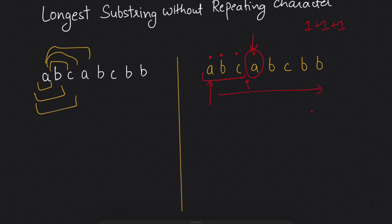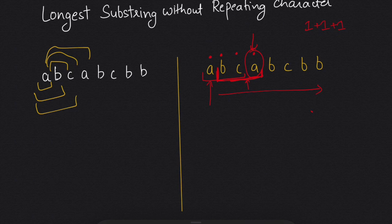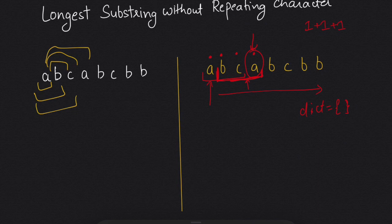Whenever we encounter a character we have seen before, we increase our starting point by one. So now our starting point starts from 'b' and our index 'i' is at 'a'. This particular technique is called the sliding window technique. Now the question arises: how will we know whether a particular character has been seen before or not? For that, we will use a dictionary as our data structure.